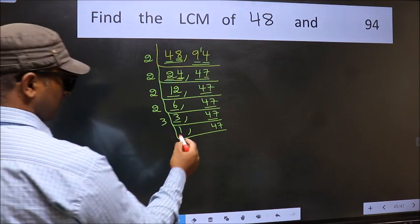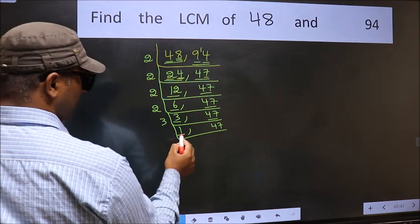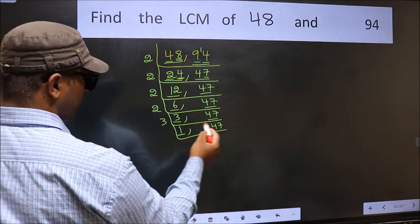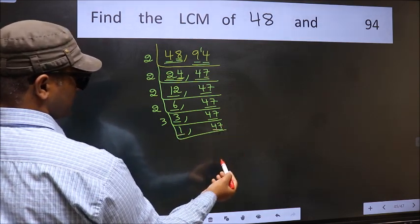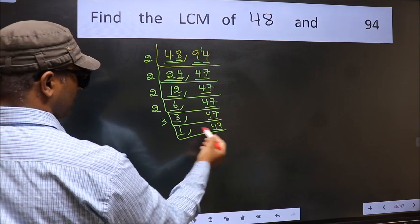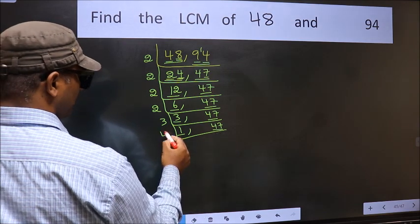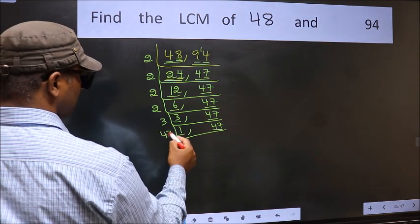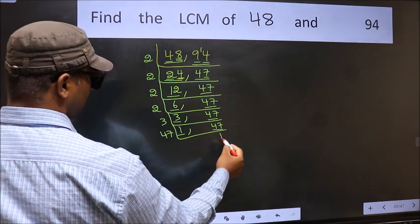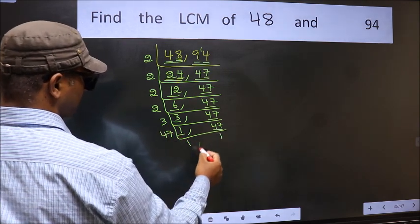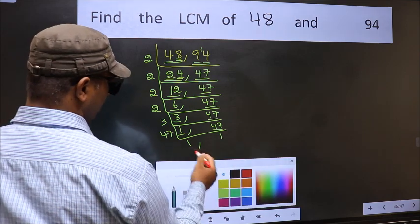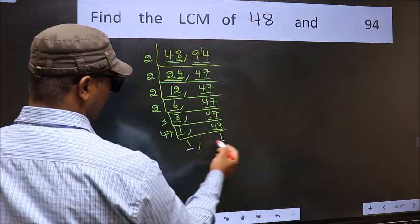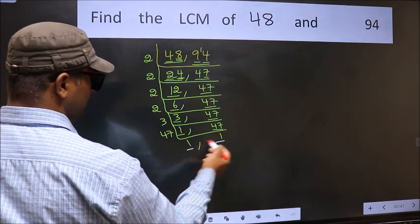Now we got 1 here, so focus on the other number 47. 47 is a prime number, so 47 once is 47. Now we have 1 in both places.